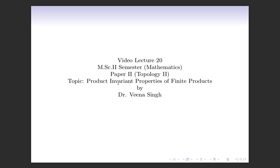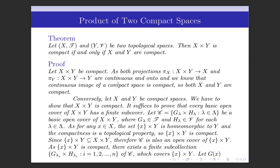Today we will discuss product invariant properties of finite products. We shall consider all those properties of topological spaces which are preserved under the product of a finite number of topological spaces. In particular, today we will discuss compactness and Hausdorff-ness. We shall prove the theorem for compactness which states that: let X, T and Y be two topological spaces, then X cross Y is compact if and only if X and Y are compact.